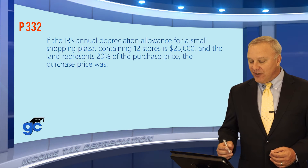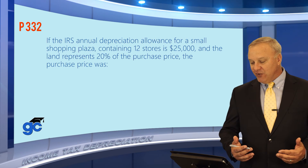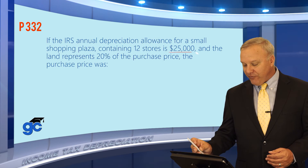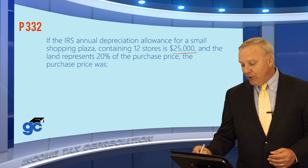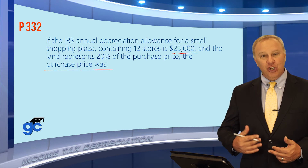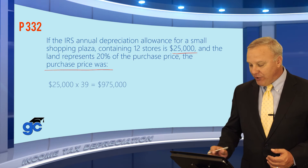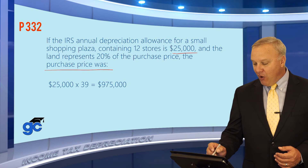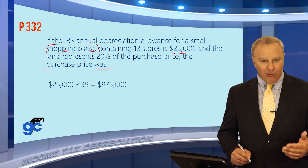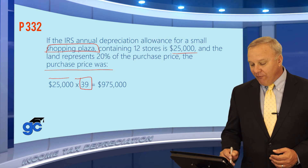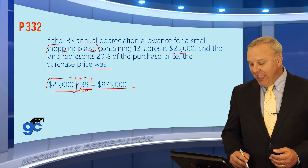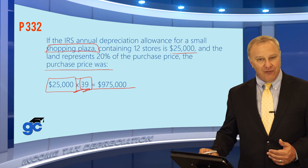Now let's take this a step further. If the IRS annual depreciation allowance for a small shopping plaza containing twelve stores is twenty-five thousand dollars and the land represents twenty percent of the purchase price, what was the purchase price? We're working this backwards — knowing the depreciation amount to figure out the purchase price. Since it's a small shopping plaza, the depreciation period is 39 years. Twenty-five thousand per year times 39 years tells us the depreciable basis was nine hundred and seventy-five thousand dollars.